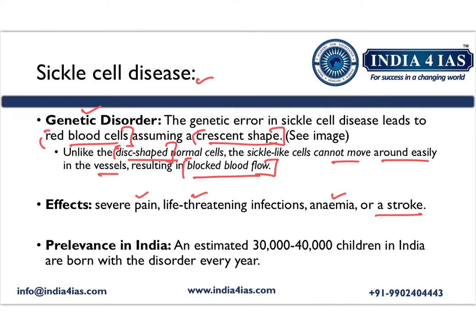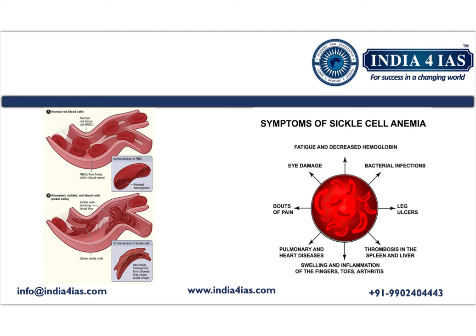In India, every year, 30,000 to 40,000 children are born with this disorder. In a normal healthy patient, red blood cells are disc-shaped, as we can see from the following image. In the case of a person with sickle cell disorder, the red blood cells assume crescent shape, causing obstruction in the flow of blood in the vessels.